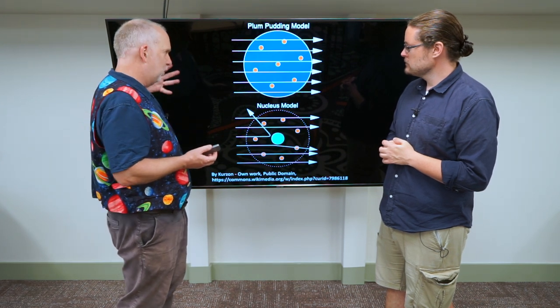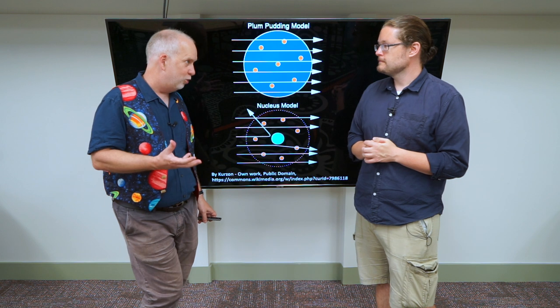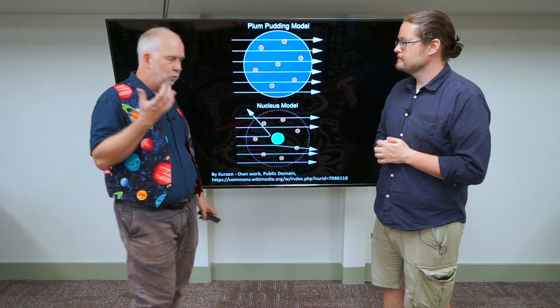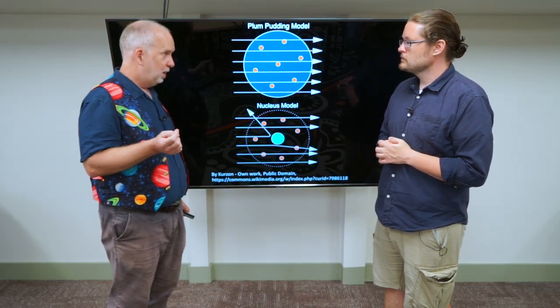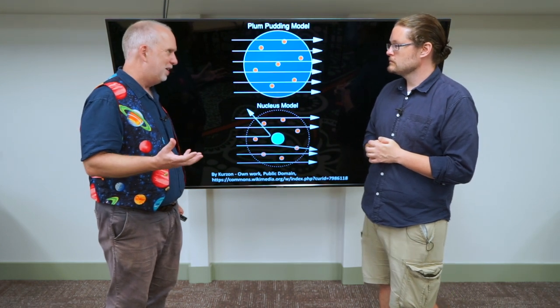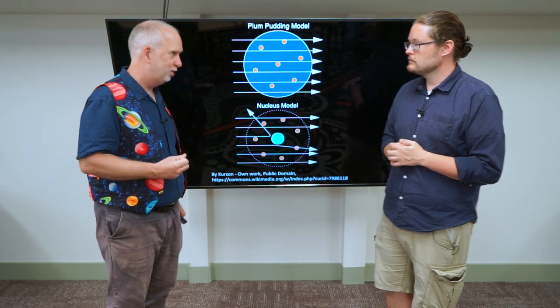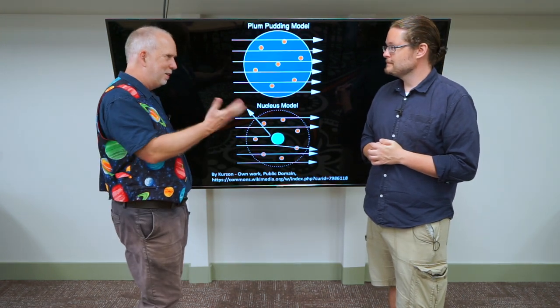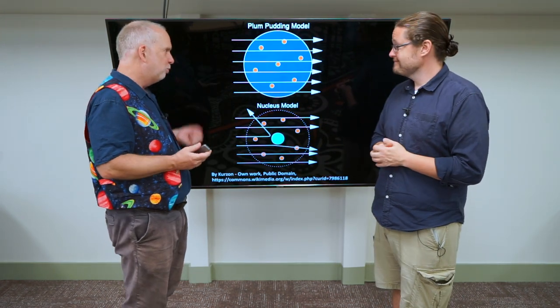So his idea was we had these new particles, we now call them alpha particles, they're actually the nucleus of helium atoms. And they had a positive charge and a lot of mass, they had like thousands of times more mass than electron. These are very heavy particles. I mean, still very small compared to day-to-day life, but much more than electron.